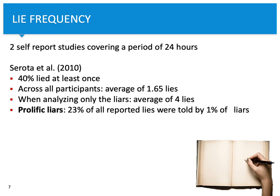Of course, some people lie more often, some less often. But that's an interesting number. When you analyze only people who lie, on average liars tell four lies. And some more prolific liars — it's not a large group, but those people lie very, very often. In this study they found that 1% of liars were responsible for 23% of all reported lies.